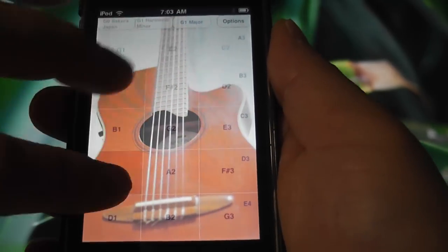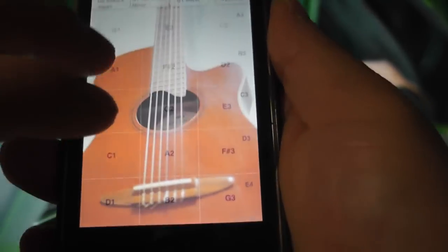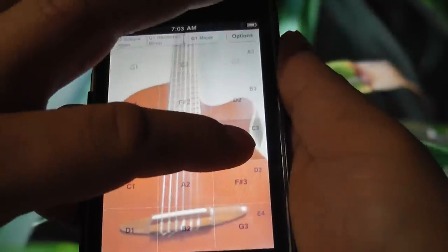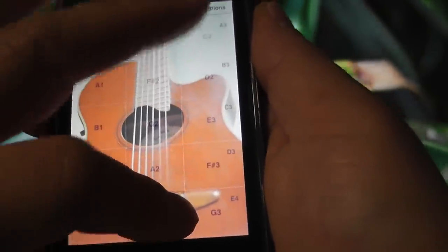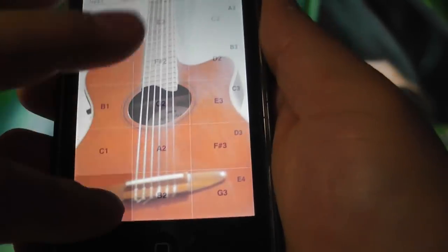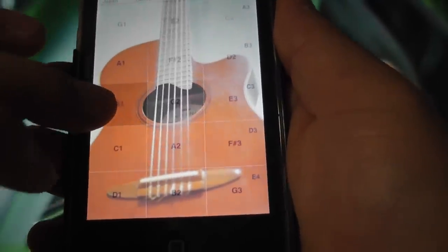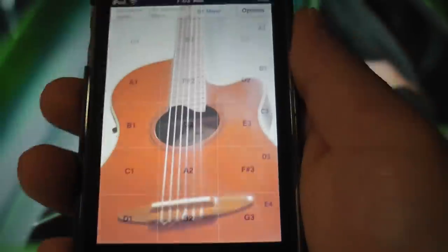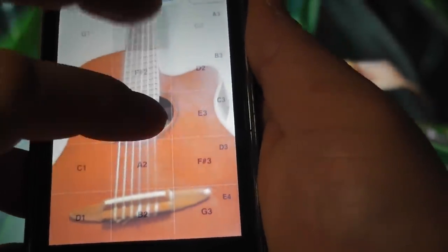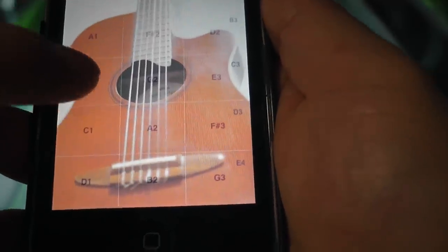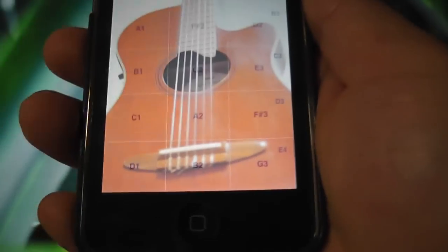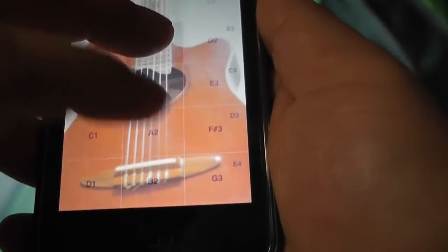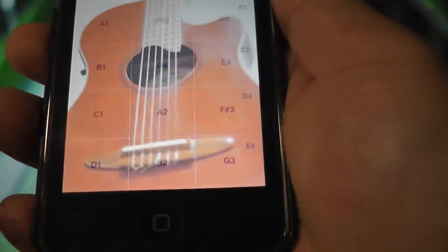And the next one is a B minor. As long as you're tapping B, D, and F sharp, you got yourself a B minor. The next one is a C major chord, so any pattern is okay. A D major chord, so any pattern is okay.